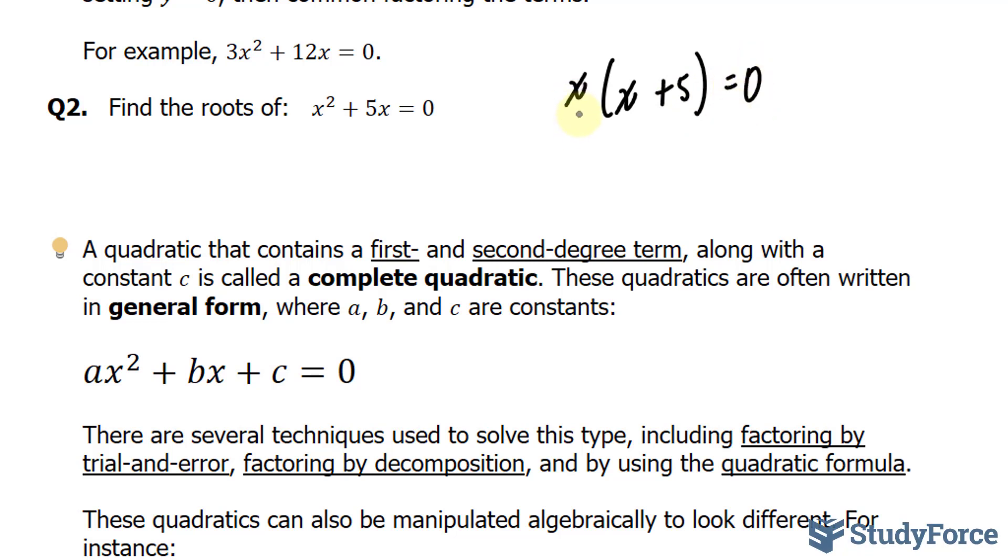Given that we have two factors, this and this, each of these need to be set equal to 0. So I'll set x equal to 0 and I'll set x plus 5 equal to 0. This one's already solved. One of our solutions is 0 and our other solution has to be x is equal to negative 5.